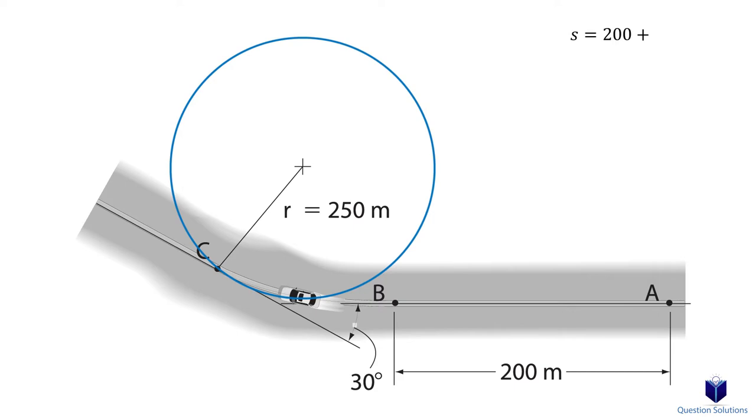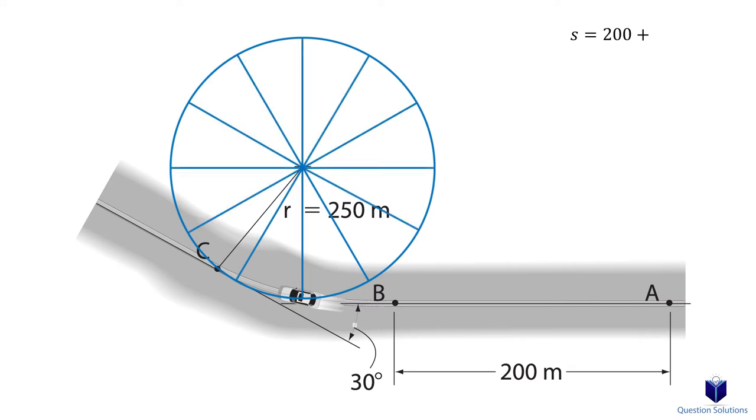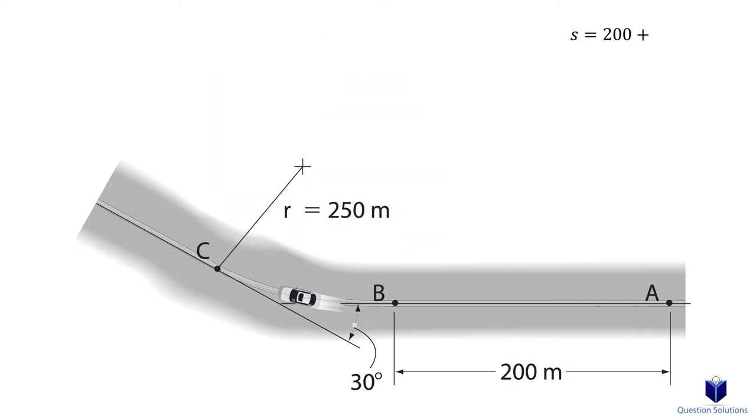Imagine a circle. We are given the radius of the circle. The angle is 30 degrees which means we need 12 pieces to complete the circle. The circumference is 2 pi r and we need 1/12th of a piece. So we have 2 pi multiplied by 250 meters divided by 12.